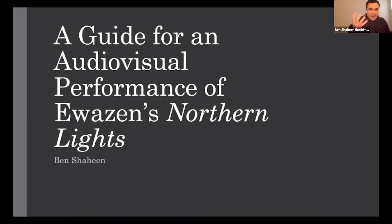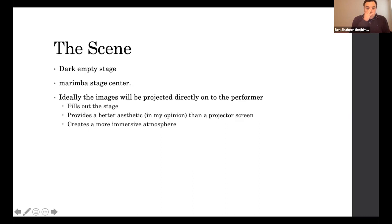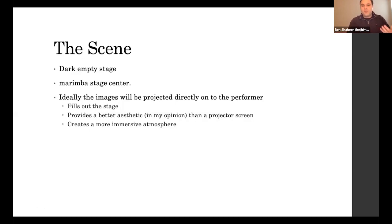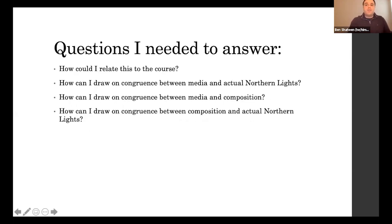I'm excited to share this guide for an audiovisual performance of the marimba solo Northern Lights. I don't necessarily have the technical abilities to put the full performance together on my own, so I started last semester making this guide. The scene I imagine is a dark empty stage with just a marimba stage center and some sort of projection mapping of images of the northern lights directly onto the performer, filling out the entire stage and creating a more immersive atmosphere for both audience and performer.